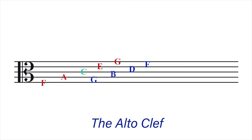You may not need to memorize the names of the lines and spaces, as you can easily derive them by having the third line as C. In any case, the clef is used only by a specified number of instruments. Ledger lines and spaces may also be used with the C clef in the same way as they are used for the treble and bass clefs.